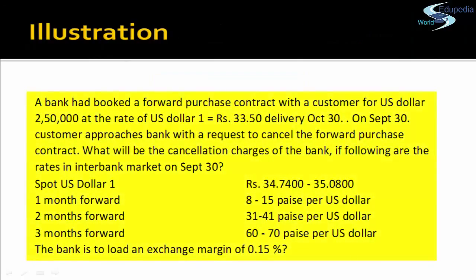This example will clear all doubts. A bank had booked a forward purchase contract with a customer for USD 2,50,000 at a rate of USD 1 = ₹33.50, with delivery on October 30th. On September 30th the customer approaches — this is an early cancellation case. The customer requests the bank to cancel the forward purchase contract. Since it's a forward purchase contract, the bank treats it as if the transaction was done; the loss from selling at spot merchant rate is recovered from the customer.